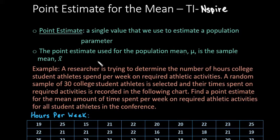So first let's talk about what is a point estimate. A point estimate is a single value that we use to estimate a population parameter. The point estimate that we use for a population mean μ is the sample mean. So anytime it asks you to find a point estimate for the population mean, all you are going to do is find the sample mean.